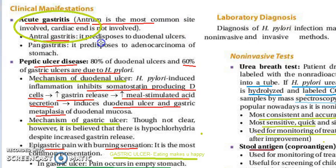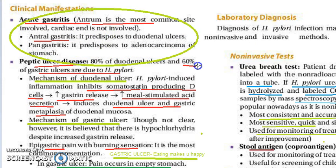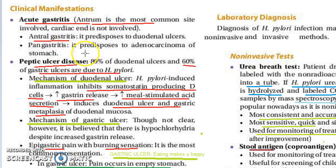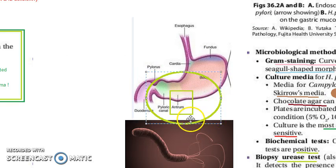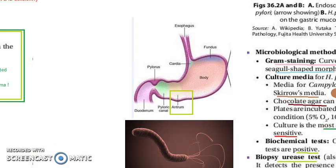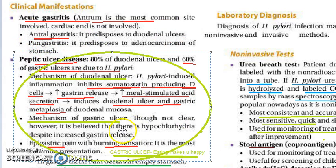Let us look at a little more detail on the clinical manifestations. Acute gastritis usually occurs as antral gastritis or pangastritis. The antrum of the stomach — here is the antrum of the stomach — can be the site of gastritis, and this is called antral gastritis.